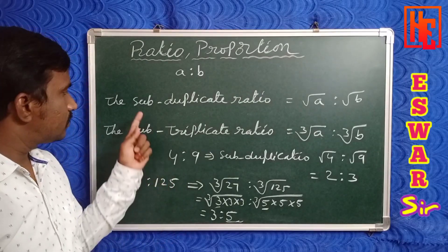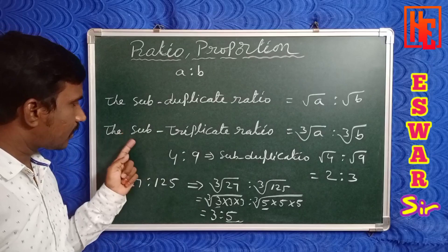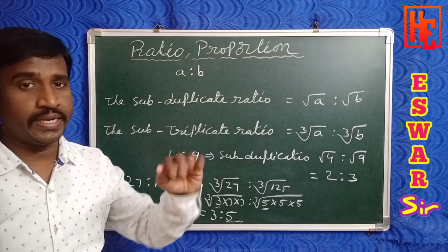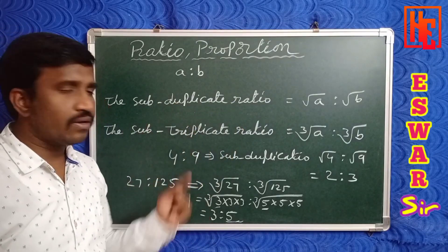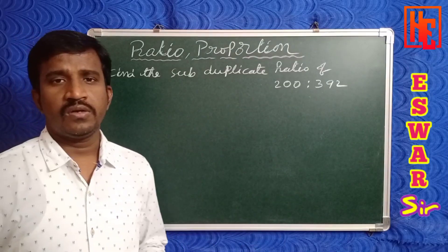So sub-duplicate and sub-triplicate ratios are inverses of the duplicate and triplicate ratios respectively.